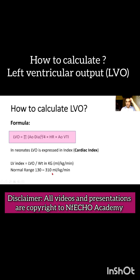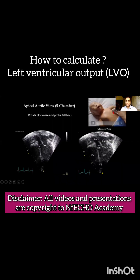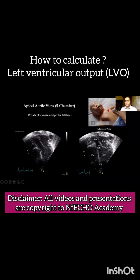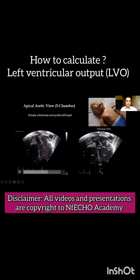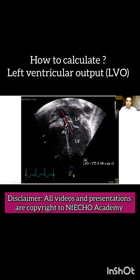The normal value is 130 to 310 mL per kg per minute. To calculate the aortic VTI, we keep the probe in the apical window with the pointer pointing at 3 o'clock and sweep upwards. The fifth chamber, that is the aorta or left ventricle outflow tract, comes up. We then keep the pulse wave Doppler gate in the aorta just above the aortic valve, as seen in this picture, to calculate the aortic VTI by tracing the pulse wave Doppler in the aorta.